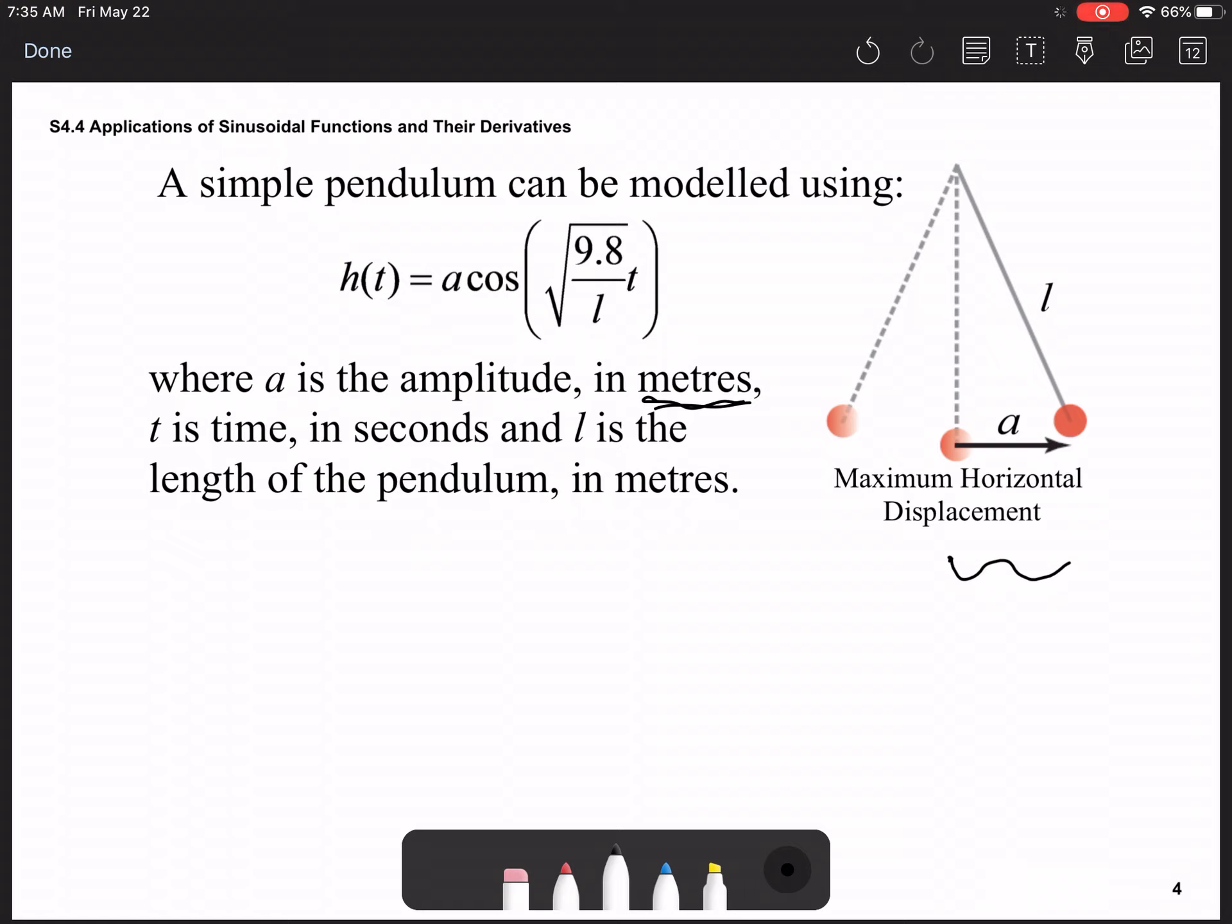If they give you the information in centimeters, you just have to change it into meters. Whatever this length is right here for the pendulum, the length should also be in meters. If it's not in meters, change it into meters. And you put it under the square root right underneath this 9.8 units. You figure those values, it'll give you this pendulum swing for this expression. And thus concludes our lesson for 4.4.